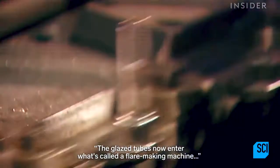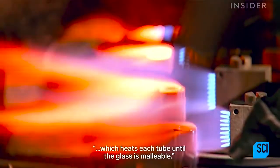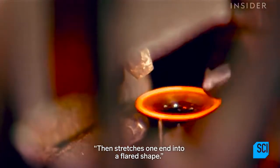The glazed tubes now enter what's called a flare-making machine, which heats each tube until the glass is malleable, then stretches one end into a flared shape.